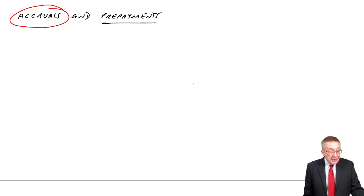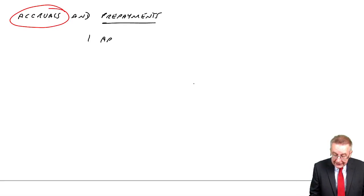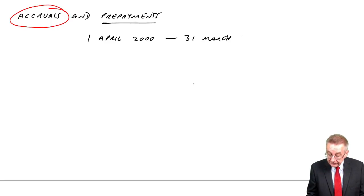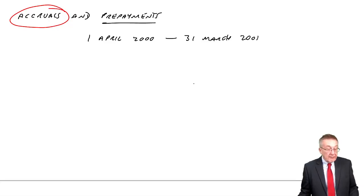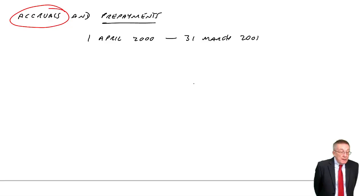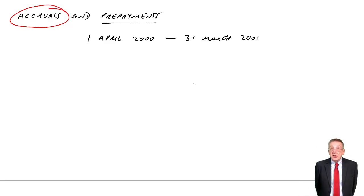His year runs from the 1st of April 2000 through the 12 months to the 31st of March 2001. And he made the following payments: in July 2000, he paid 500 for the 3 months to 30th of June.